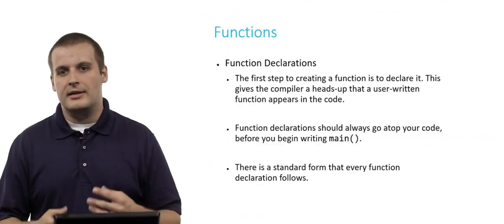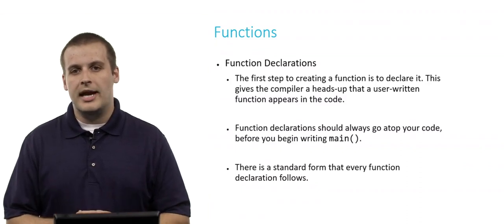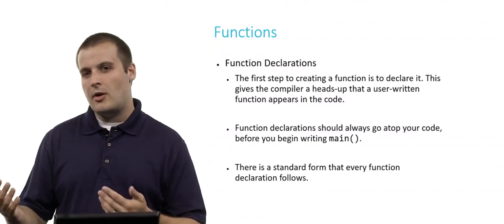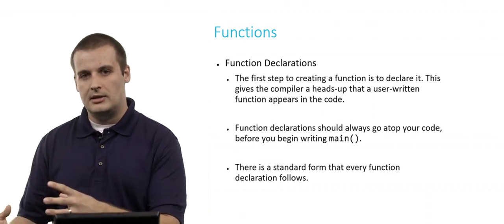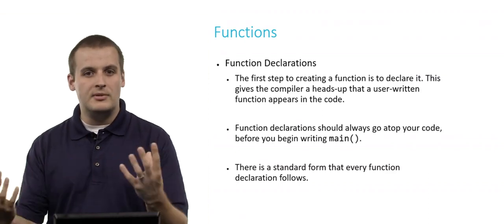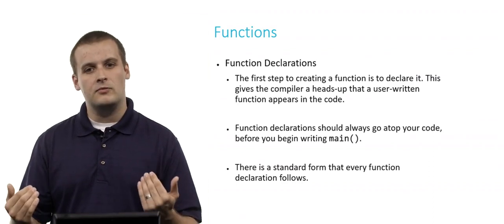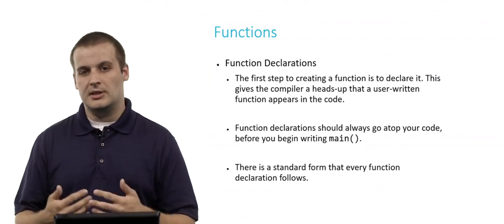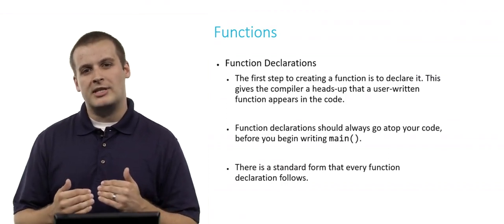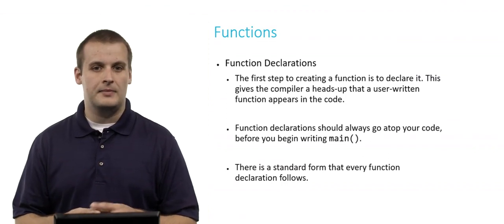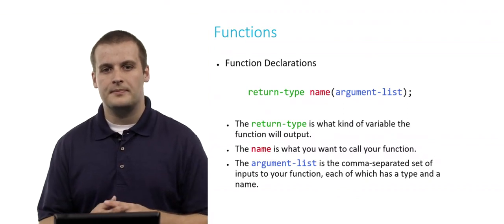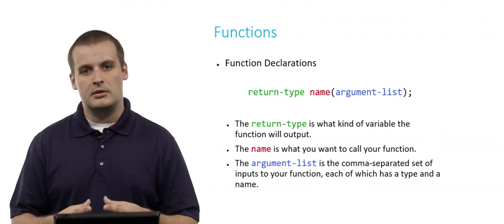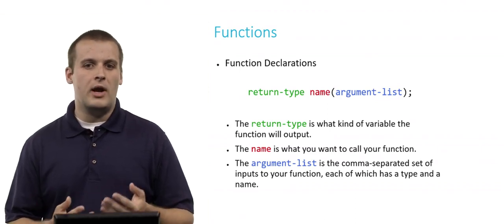All right, so functions are great. Now let's start writing them and getting them into our programs. In order to do that, the first thing we need to do is declare the function. When you declare a function, you're basically telling the compiler: just so you know, I am going to be writing a function later on, and here's what it's going to look like. The reason for this is because compilers can do some weird things if they see symbols they're not familiar with. Function declarations generally go at the very top of your code, right before you start writing main. There are three parts to a function declaration: return type, name, and argument list.